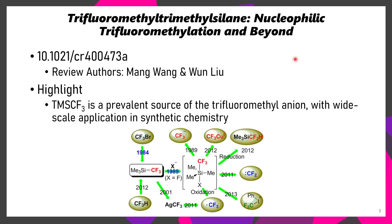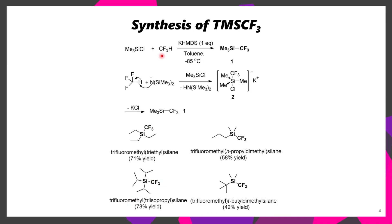The first paper for today is a review summarizing a lot of the research that's been done with trifluoromethyl-trimethylsilane. This is likely the most common CF3 reagent used in synthetic chemistry, as it can be used for such a wide range of transformations. The way that this reagent is synthesized is fluoroform is treated with a base in the presence of trimethylsilyl chloride.